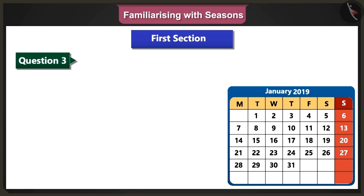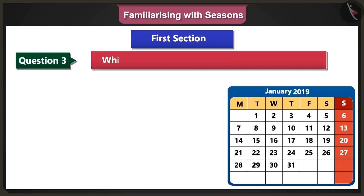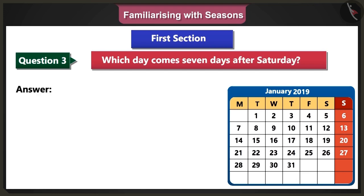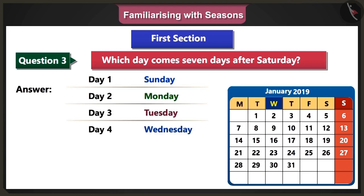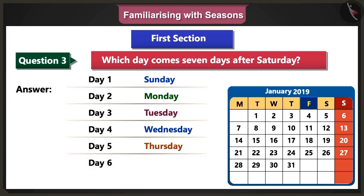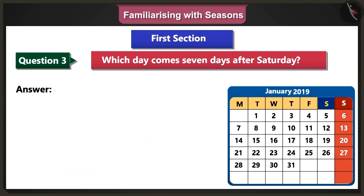Third question: Which day comes seven days after Saturday? Answer: After Saturday comes Sunday, Monday, Tuesday, Wednesday, Thursday, Friday, and Saturday. So, Saturday comes again after seven days.